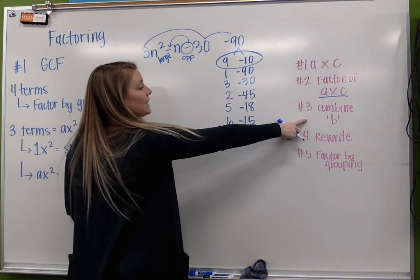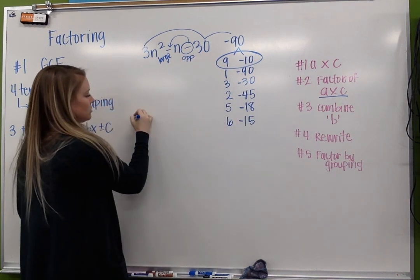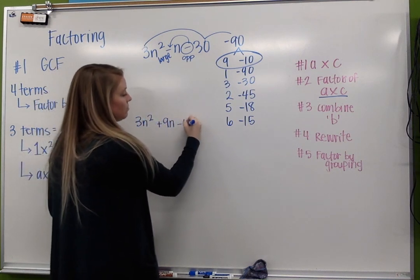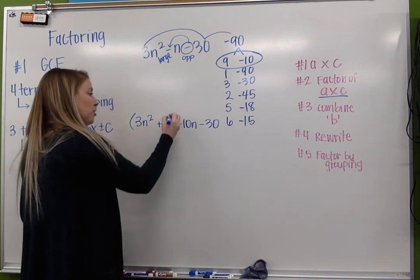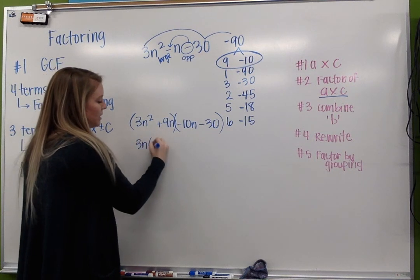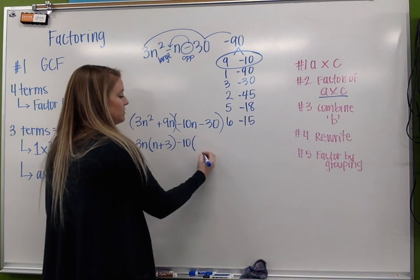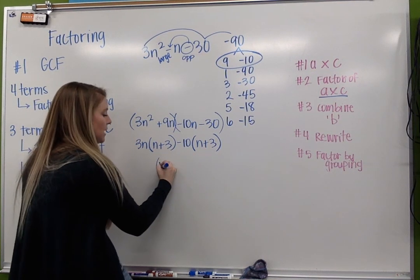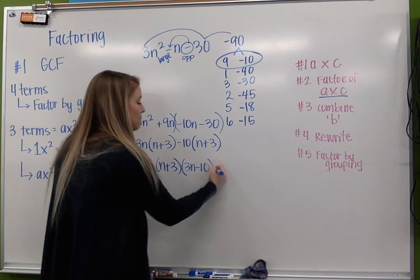So my 9 and negative 10 combine to equal b, so now I'm ready to rewrite. Now I have 3n² + 9n - 10n - 30. And I'm ready to factor by grouping. My first two terms have a 3n in common, which leaves me with n + 3. My second two terms have a negative 10 in common, which leaves me with an n + 3. So together, we have an n + 3, and I'm left with 3n - 10.